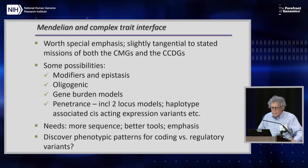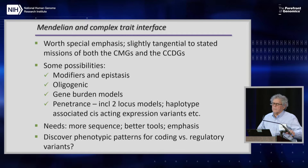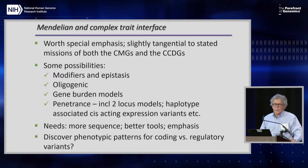There are many possibilities — all extremely interesting from a genetics point of view: modifiers, epistasis, oligogenic inheritance, and so forth. We need more sequence and better tools to analyze to get at this. We also want to ask: are there patterns of phenotypes that are more likely to be regulatory variants versus coding variants? And I should point out that coding variants help establish which regulatory mutations connect to which genes.